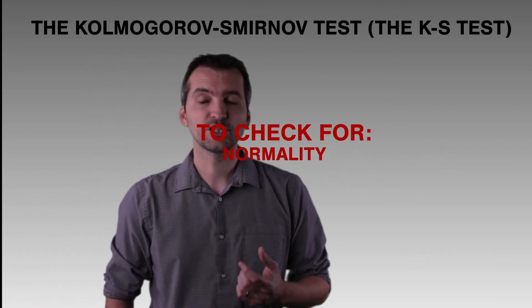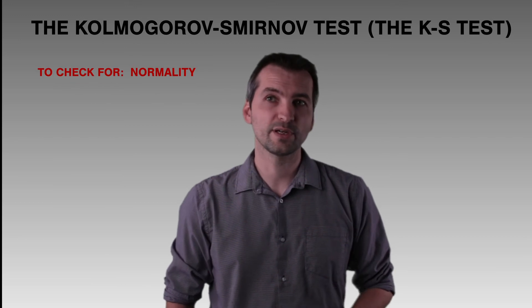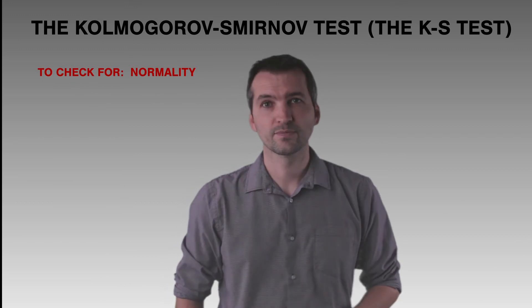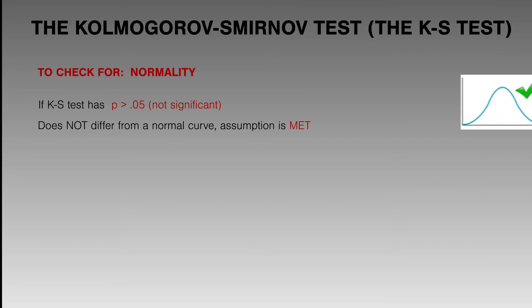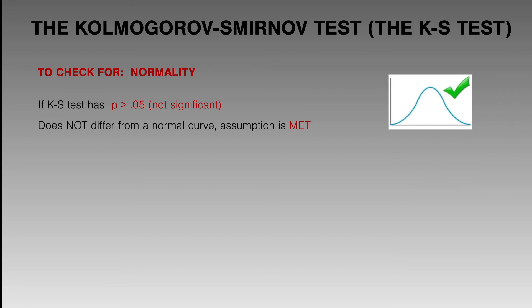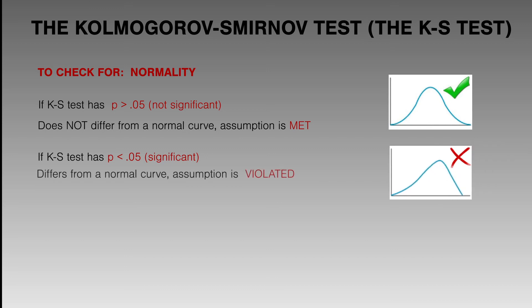The second SPSS test is the Kolmogorov-Smirnov test, or KS test. The KS test checks for normality, the fourth assumption of parametric testing. If the p-value is more than 0.05 — not significant — the distribution of scores does not differ from a normal curve and the normality assumption is met. If the p-value is less than 0.05, the distribution differs from a normal curve and the normality assumption has been violated.